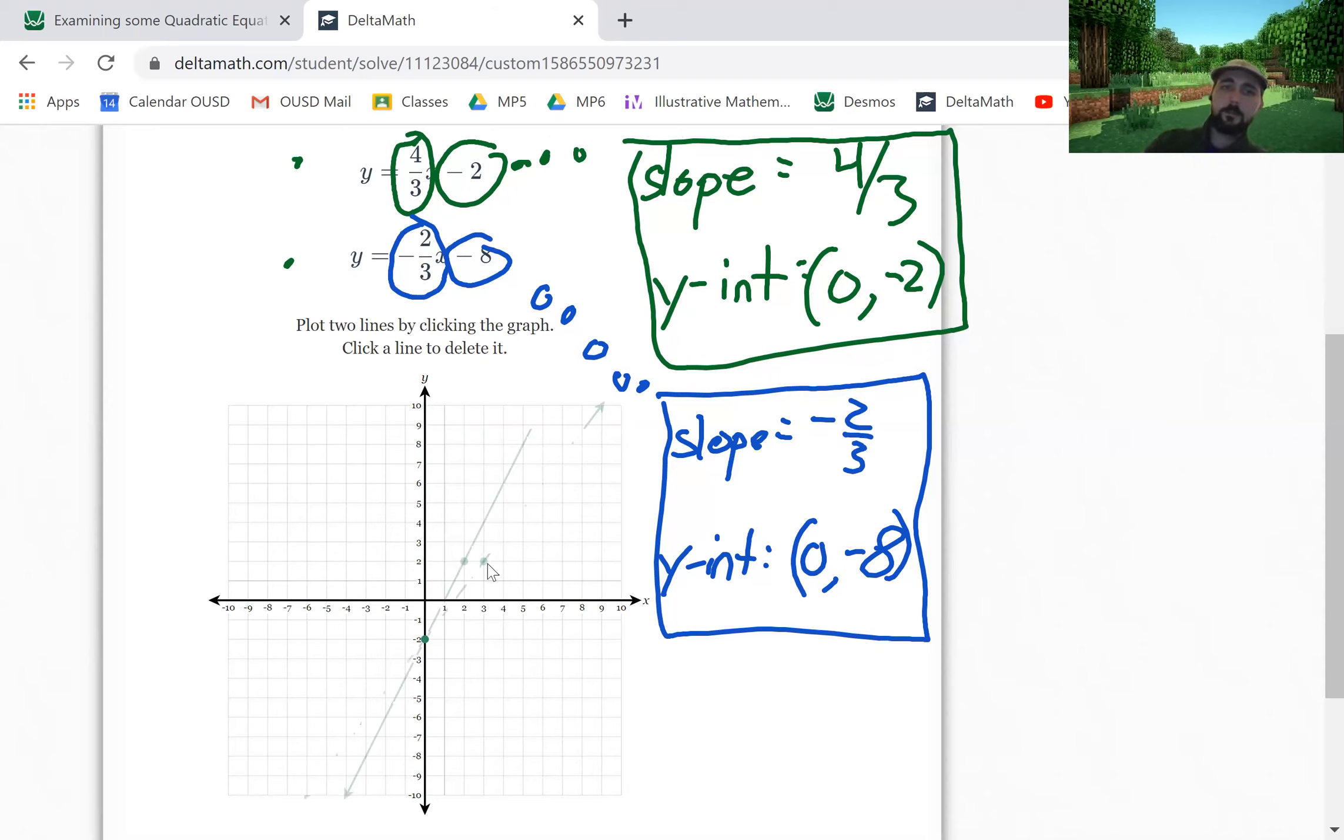I can annotate this again, but I'm going to do the other line first. So the other line has a y-intercept of negative 8 and a slope of negative 2 over 3, which means I go down to negative 8, and then I go down 2 and over one, two, three.